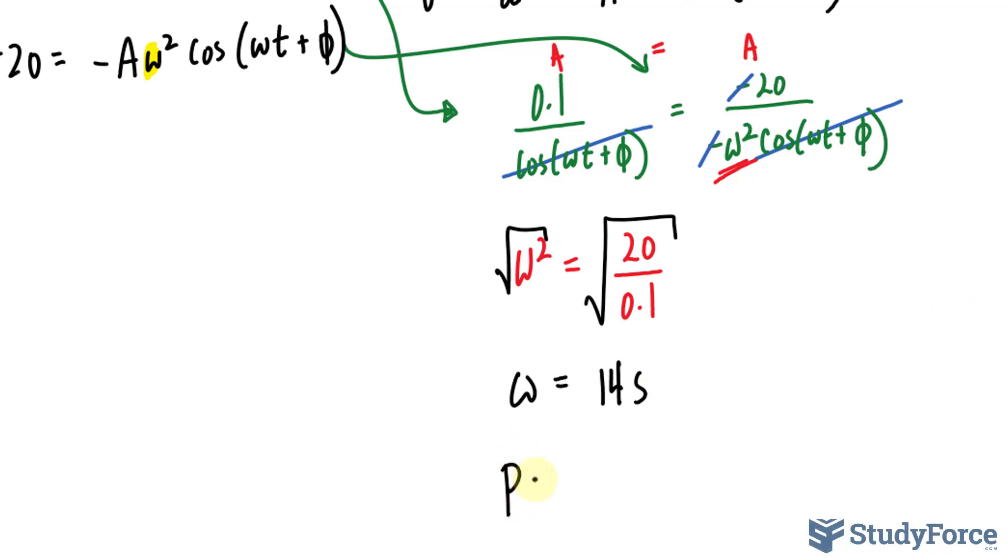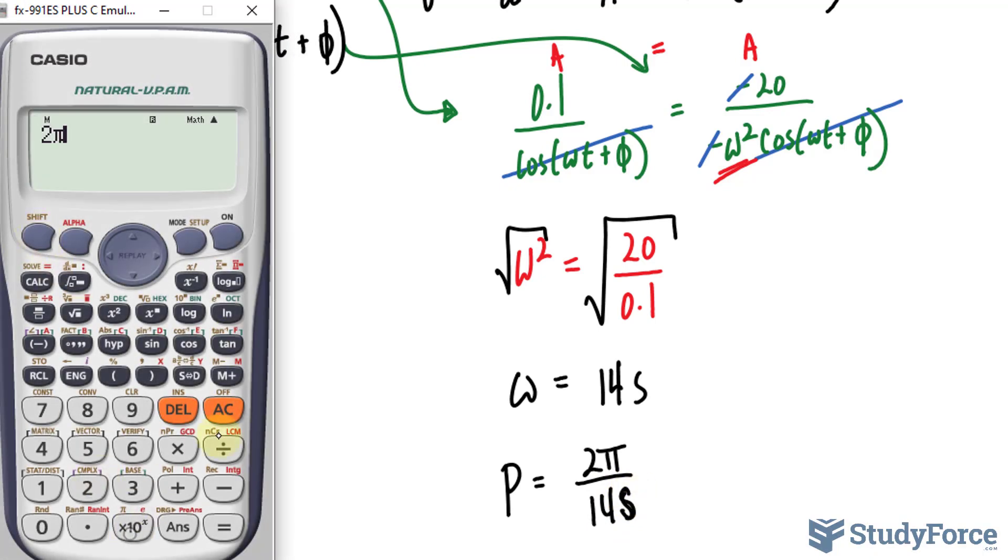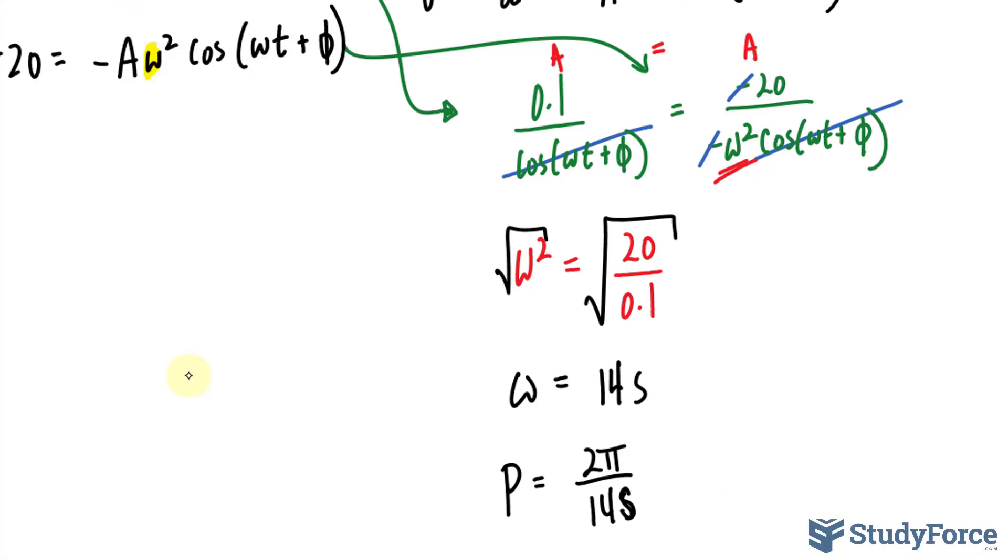If we need the period, we take this value and we divide 2 pi over 14 seconds. Taking 2 pi and dividing it by 14 gives us our period as roughly 0.45, 0.45 per second or cycles per second.